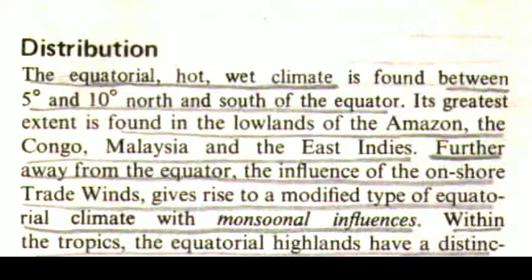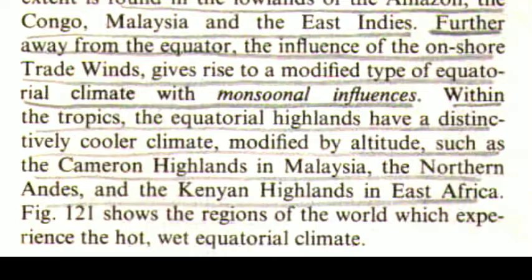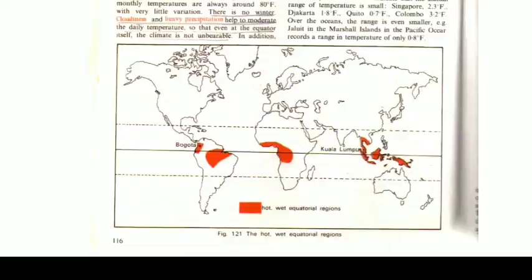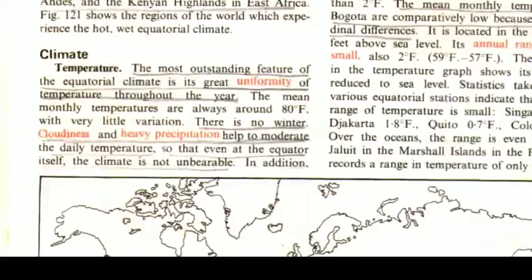The equatorial hot wet climate is found between 5 degrees and 10 degrees north and south of the equator. Its greatest extent is found in the lowlands of the Amazon, the Congo, Malaysia, and the East Indies. Further away from the equator, the influence of onshore trade winds gives rise to a modified type of equatorial climate with monsoonal influences. The equatorial highlands have a distinctively cooler climate modified by altitude, such as the Cameron Highlands in Malaysia, the northern Andes, and the Kenyan Highlands in East Africa. Figure 12.1 shows the regions of the world which experience the hot wet equatorial climate.